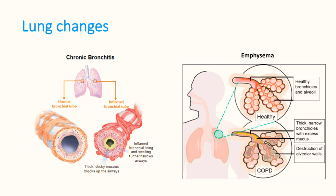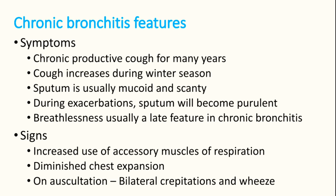The predominant feature of chronic bronchitis is cough with progressive breathlessness. There will be increased mucosal glands, and gradually the alveolar air space reduces. Patients present with severe productive cough for many years, a history of smoking, and symptoms of chronic productive cough for at least two years. The cough increases during winter, and sputum is normally mucoid and scanty.